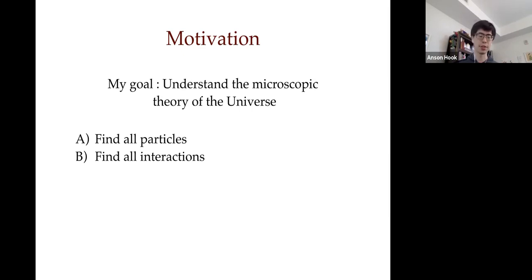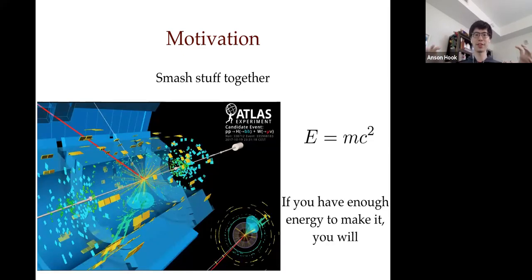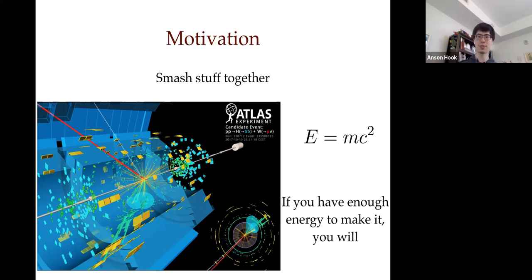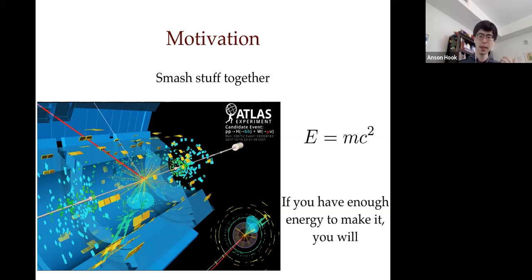The traditional way of doing this is to take stuff, smash it together, and utilize Einstein's famous equation E=mc². Quantum mechanics tells us if something can happen, it will happen — maybe with a really small probability, but it will happen. And E=mc² means all you have to do is shove enough energy into a small area for something amazing to happen. For example, if you run the LHC long enough, there's a non-zero probability that a unicorn will fly out of the collision.